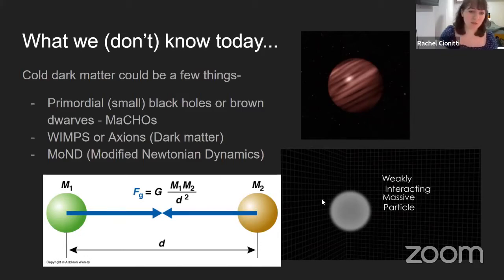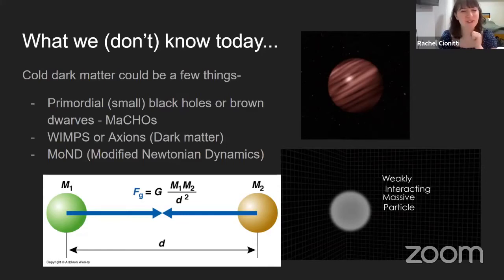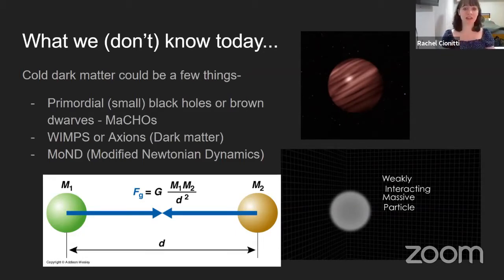The first option is called MACHOs — a great acronym — which means Massive Compact Halo Objects. This essentially means people think they are made of baryonic matter; they're very massive but small and exist in places outside of galactic disks — in halos around interstellar objects. People think these could either be brown dwarfs, which are objects that almost became a star but didn't quite get there, basically really hot planets — or really small black holes — because neither of these things give off a lot of light. However, we discussed earlier why dark matter probably isn't made of baryonic matter, so this theory isn't very popular.